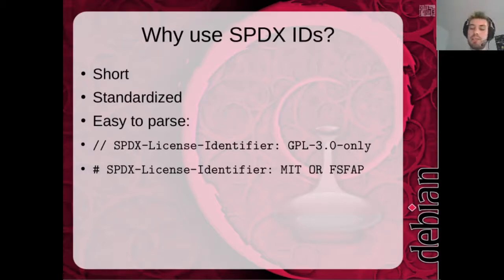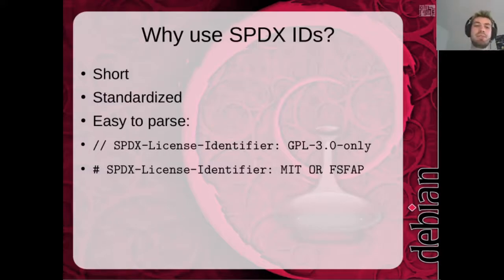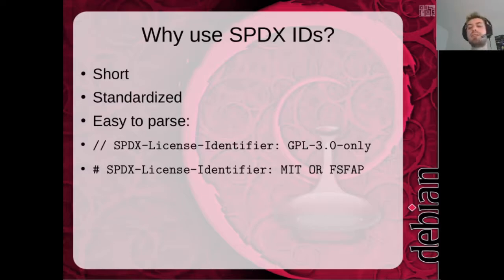They're also easy to parse. In the case of the GPL, you have a pretty long header for files, but with SPDX license identifiers that's shortened to just one line, as you can see in the examples. It's also possible to state several licenses — for example, MIT or FSF-AP — which is pretty easy to parse if you have multiple licenses.